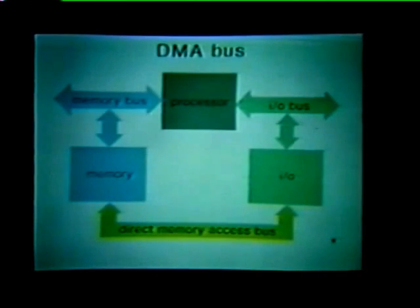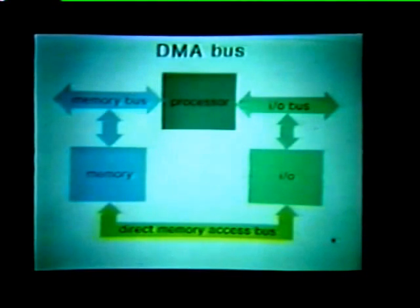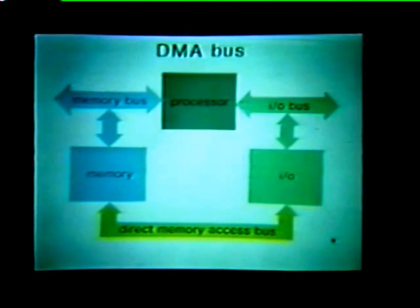In this traditional system, the I/O device cannot communicate directly with memory. If the device wants to enter information into memory, the information must pass through the processor, thereby tying it up. We can solve this problem by adding a third bus between the I/O device and memory. Because the device can now deal directly with memory, we call this bus a direct memory access, or DMA, bus.